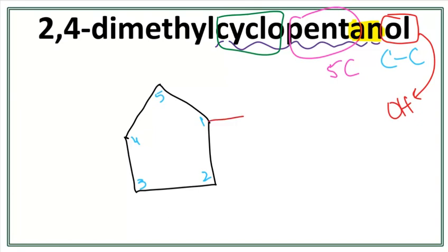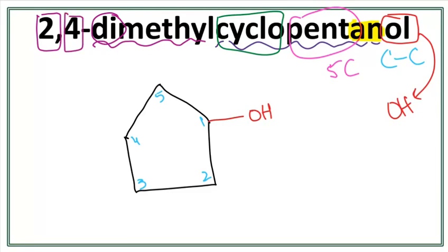So let's attach the OH. Now, we have a dimethyl attached to this alcohol. 'Di' tells us that there are 2 groups of methyl attached. One of them is on the second carbon, and the other one is on the fourth carbon. So one methyl is attached here, the other methyl is attached here. Let's get rid of these numbers and attach a methyl on the second carbon and on the fourth carbon.